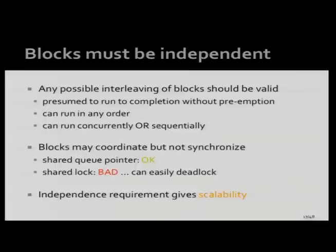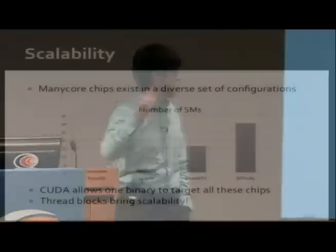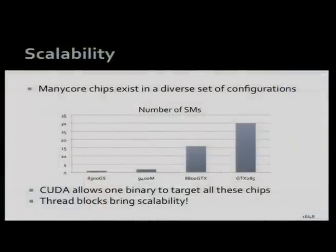This independence requirement on thread blocks makes you write scalable programs. NVIDIA's product line has had GPUs with as few as one SM and as many as 30 SMs. CUDA allows the exact same binary to target all of these and run efficiently across the range, because thread block independence means your program must be scalable and very parallel.